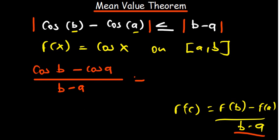This is supposed to be equal to the derivative evaluated at a point c. The derivative of cosine is negative sine, so according to the Mean Value Theorem we expect this to equal negative sine of c.